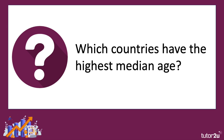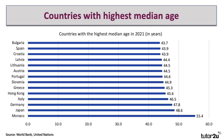Which countries have the highest median age? Well, here's the data. The data for 2021 puts Monaco at the top, although it's a principality really rather than a country. So, if we take significant countries, Japan has the highest median age in 2021. Indeed, its median age — 48.6 — is the highest of any major country, and more than twice that of the African median age.